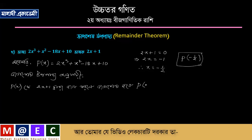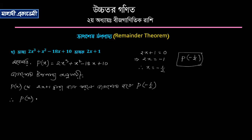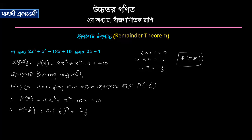p of minus half — we will find this the same way. p of x equal to 2x cubed plus x squared minus 18x plus 10. p of minus half equals 2 into minus half cubed, plus minus half squared, minus 18 times minus half, plus 10.